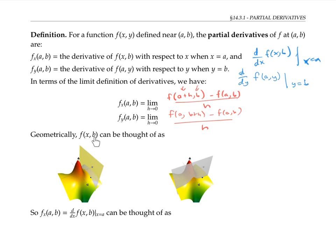Geometrically, when we fix y constant at b and let x vary, that's like intersecting our surface, z equals f(x,y), drawn here with the plane y equals b, that's parallel to the xz-plane. That intersection gives us a curve, which I'll draw here in purple.